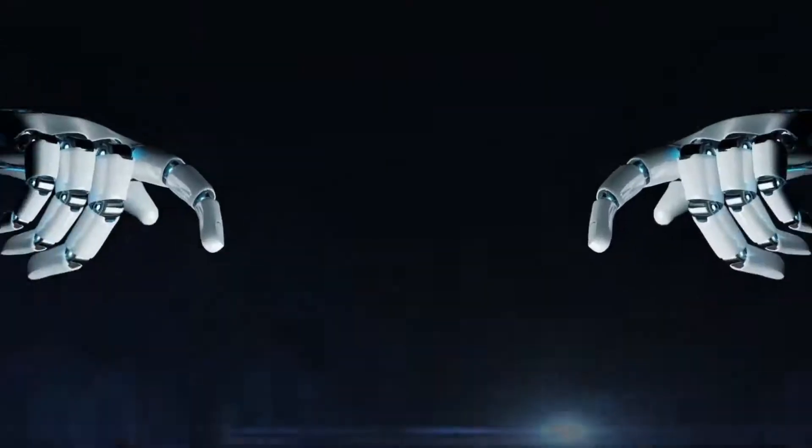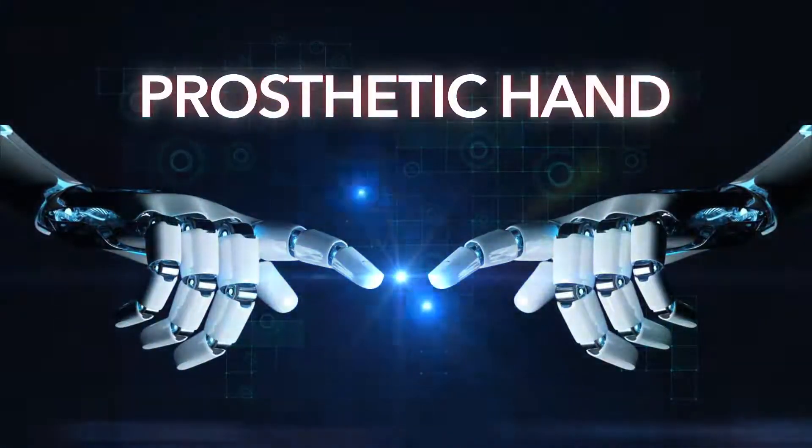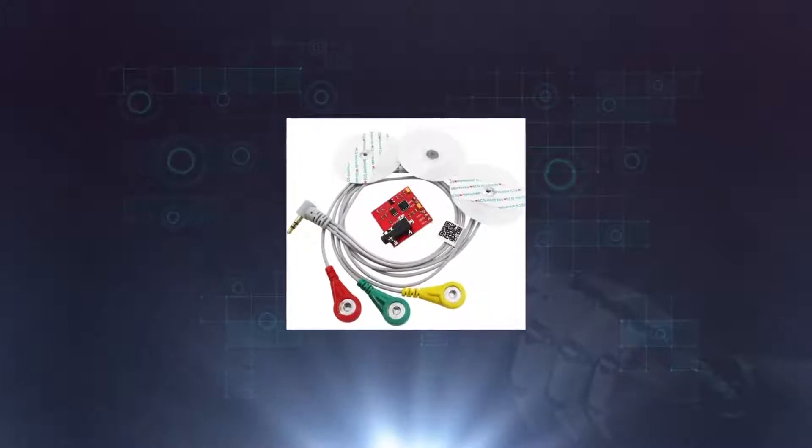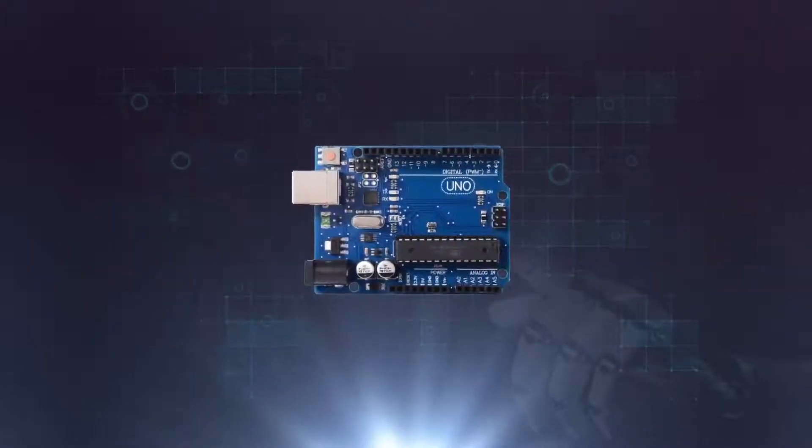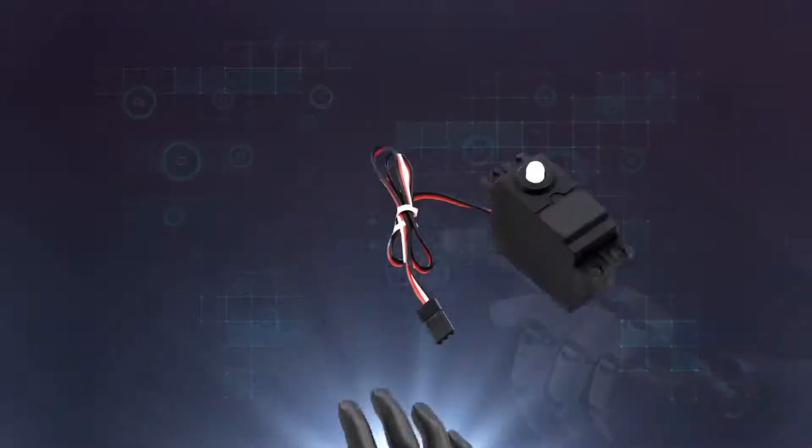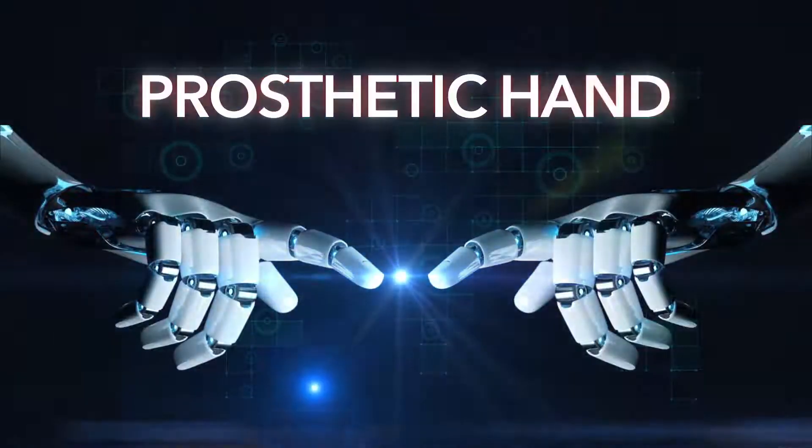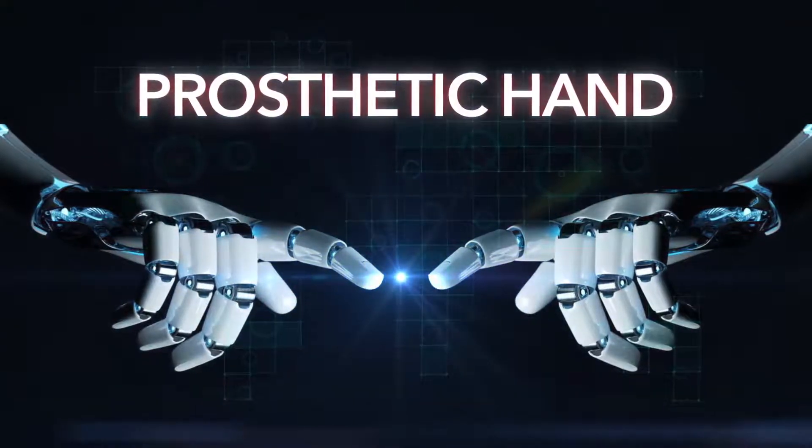Now let's look at the main components of this project. We need an EMG sensor with electrodes, two Arduinos, two Bluetooth HC-05 modules, a prosthetic hand, four servo motors, and two 9-volt batteries.